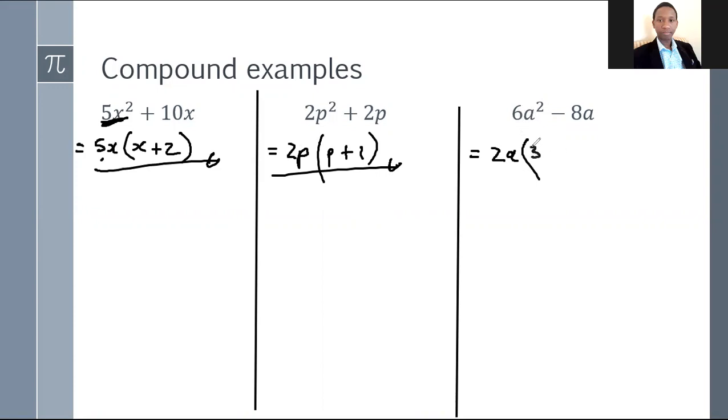Let's see, 6 divided by 2 is a 3. A squared divided by a is an a minus. That's the sign between the two terms. 8 divided by 2 is a 4. A divided by a is a 1. So that means 2a into 3a minus 4 is my final answer or solution to this expression.